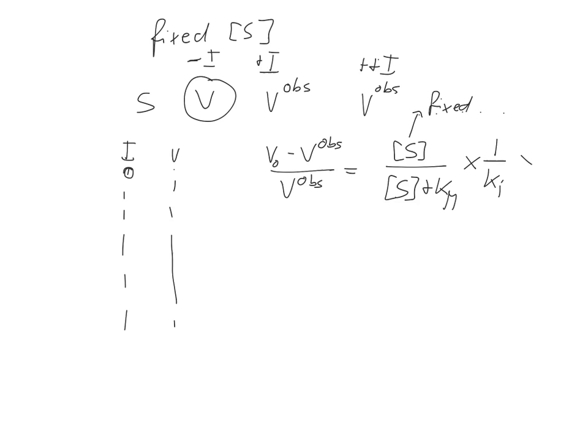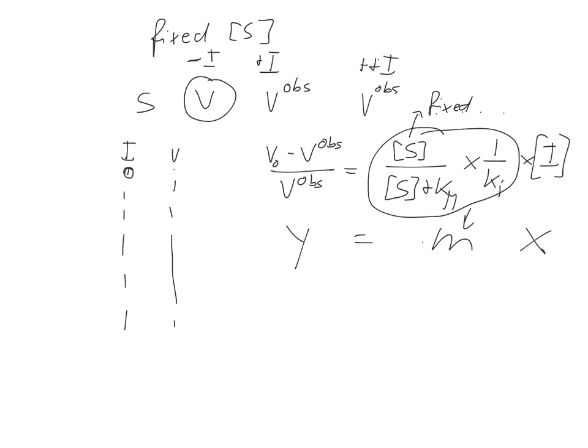What you see here is that this, in principle, is the equation for a straight line: y equals mx. This particular term is the gradient for our graph, and the interesting and nice thing is that we have Ki in this gradient.